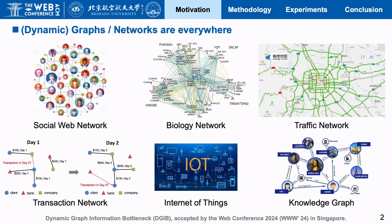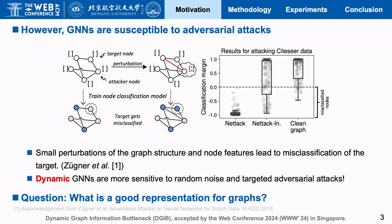As it is known to all, various types of graphs or networks are emerging in our daily life. However, the widely adopted GNNs are susceptible to adversarial attacks. It is observed that small perturbations of the graph structure and node features lead to misclassification.